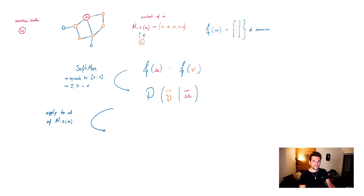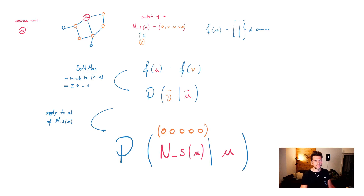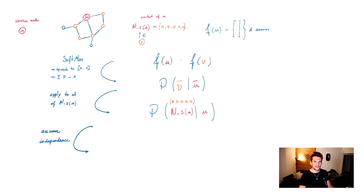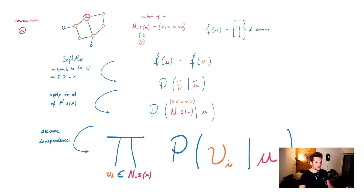However, we don't want to do that for only one node v in the context of u, but for the entire context of u. So we start from source node u and want to find the probability for all nodes in its context. The probability for having this entire context given node u is a conditional probability applied to the entire context of u. Assuming independence of nodes in the sampled context, we can write this as a product over all nodes in the context of u, taking the conditional probability for each: the probability of seeing one context node given node u, as a product over all samples.